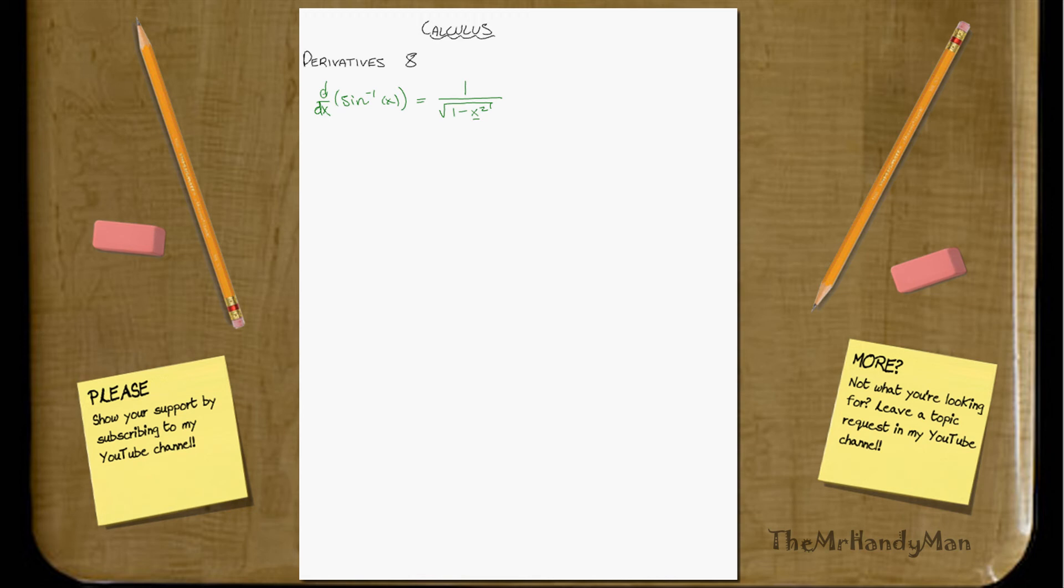Okay, well, that was easy enough, right? Let's try d/dx of cosine negative 1 of x. And this one is very similar, just has a negative in front. 1 over square root of 1 minus x squared. That one's negative, though.